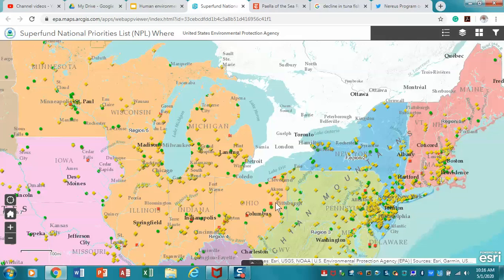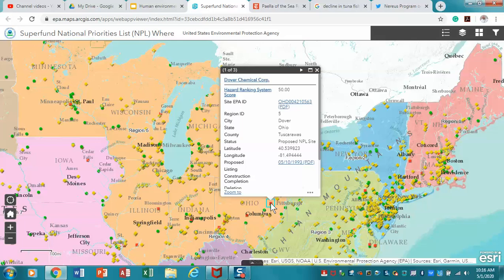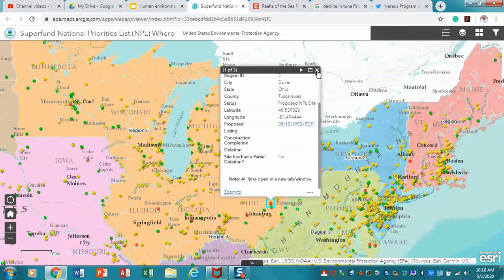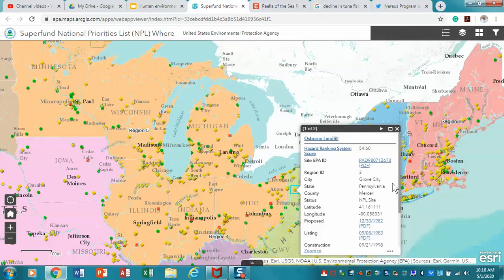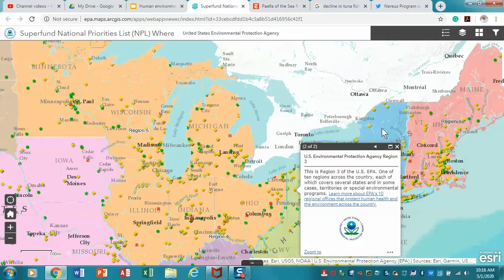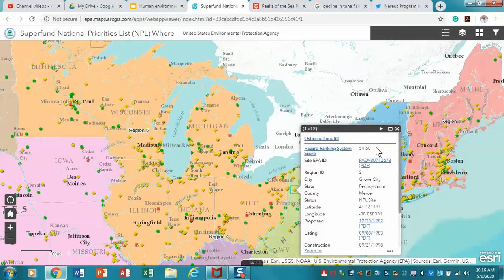But in some of these cases, they're really quite significant. So if I click on one, this happens to be... let's see, I'm going to pick a different one in our area. This is in Grove City, Pennsylvania.